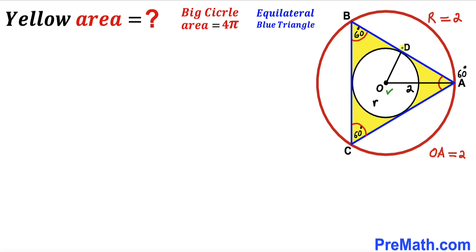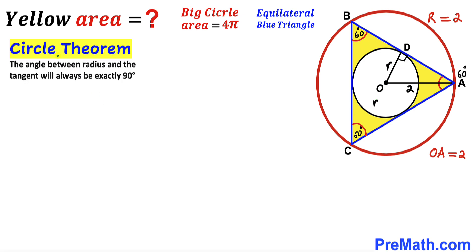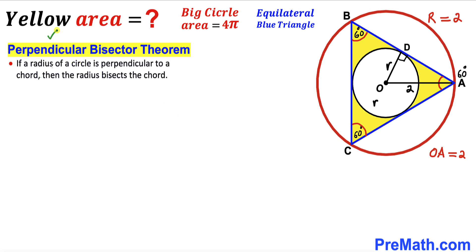Next, I've connected center O with the point of tangency D, giving us triangle OAD. We can see that OD is the radius of the smaller circle, so OD = lowercase r. Recalling the circle theorem: the angle between a radius and a tangent is always 90 degrees, so angle ADO is 90 degrees, since OD is the radius and AB is the tangent line.